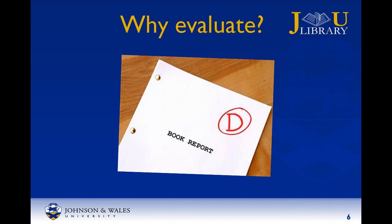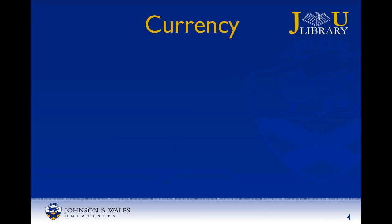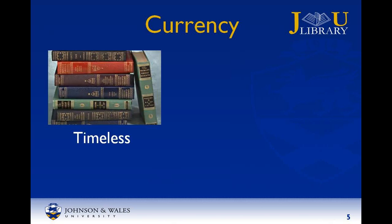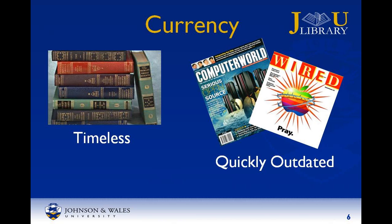Let's look at each of the criteria in more detail. The C in CRAP is for currency. Currency refers to the timeliness of the information. Some written works, such as classic literature, are ageless, while others, like technological news, are outdated quickly.